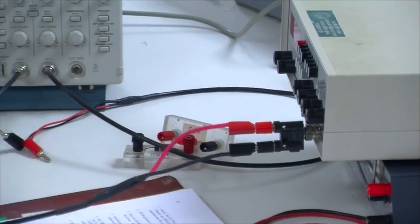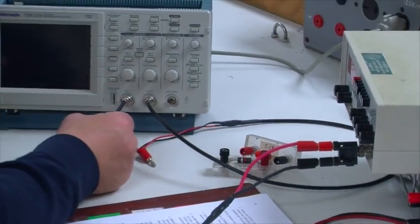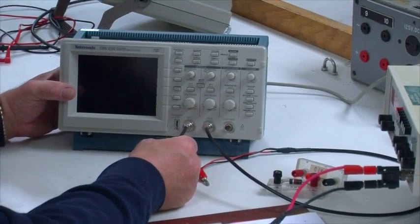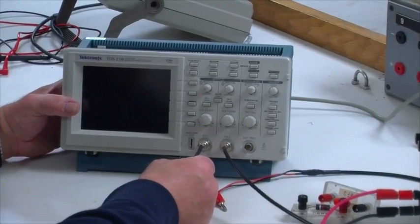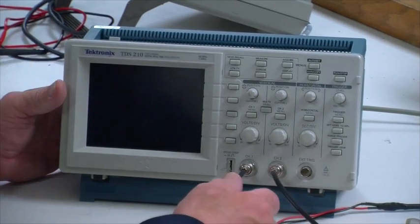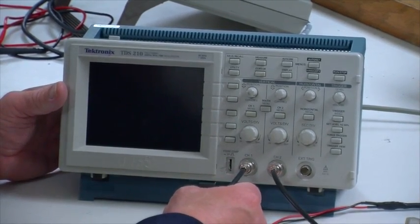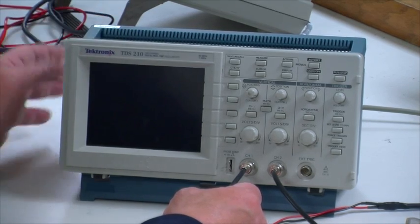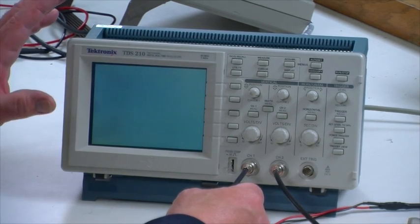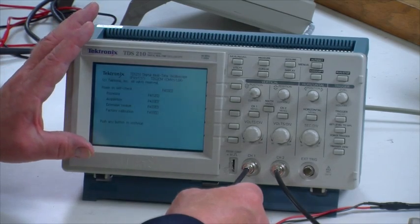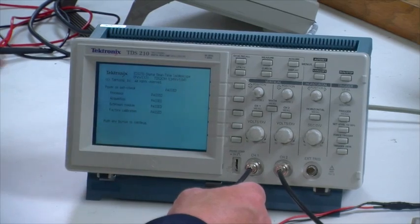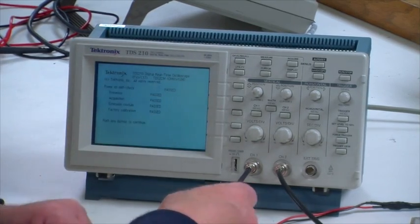This is going into channel one of the oscilloscope. The oscilloscope is basically a voltmeter, and instead of moving a needle or giving a digital readout like an ordinary voltmeter, what it does is essentially plot a graph of voltage on the y-axis versus time on the x-axis.